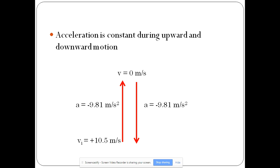And if the object ends up landing at the same height from which it started, it's going to have the same magnitude, but that final velocity is going to be a negative 10.5 meters per second. Negative because that velocity is in the downward direction.